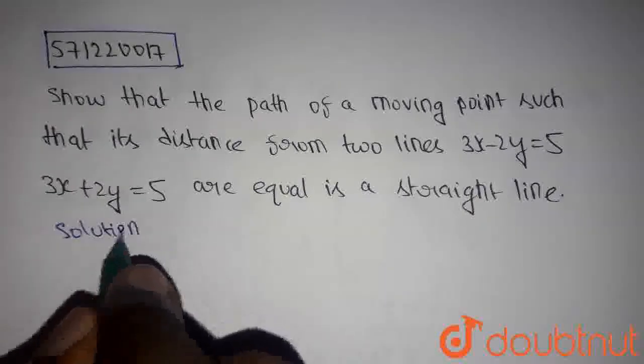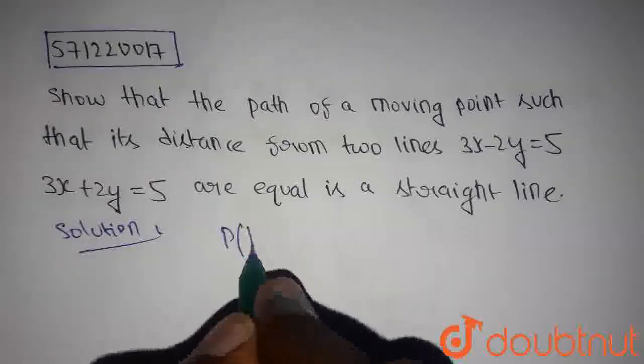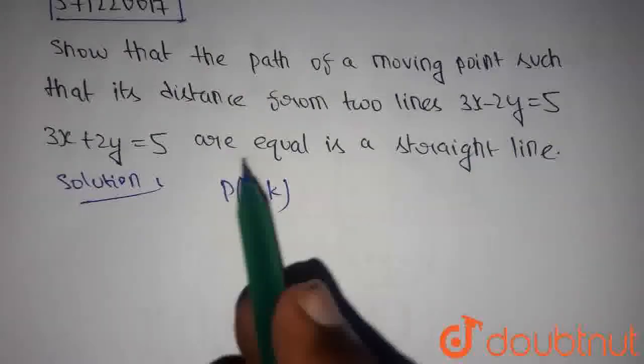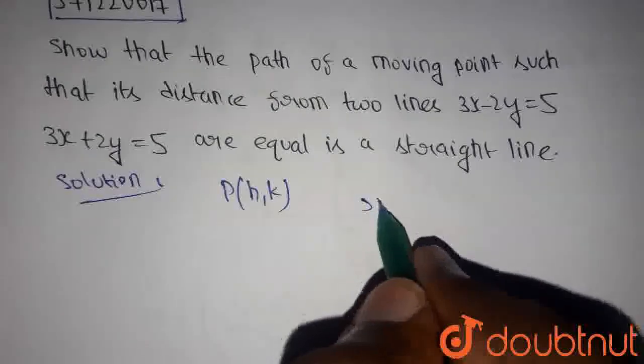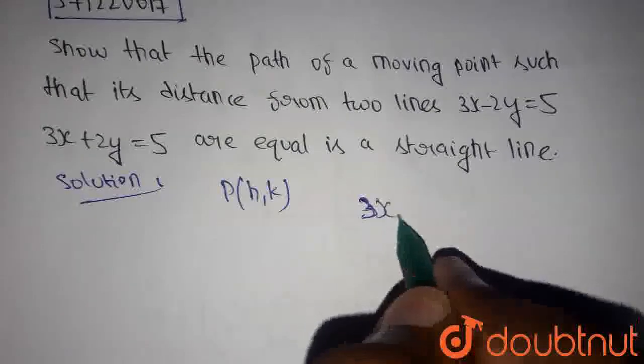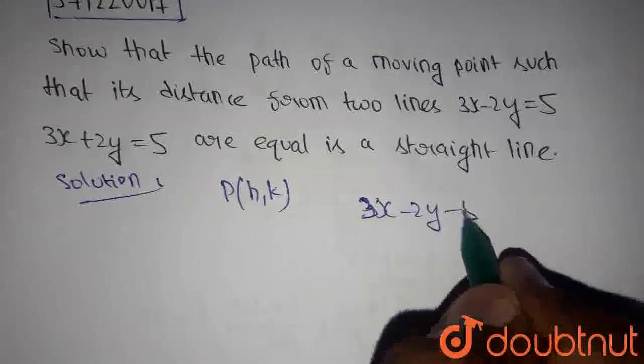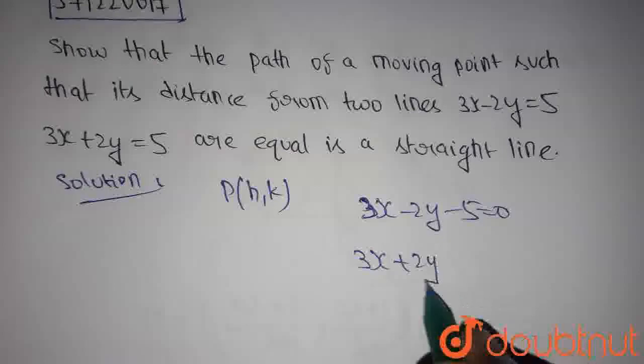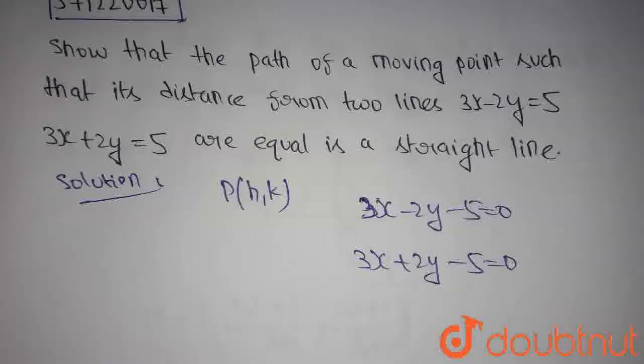Let's consider a point P that is moving such that its distance from those two lines is equal. The first line is 3x+2y-5=0. The second line is 3x-2y-5=0.